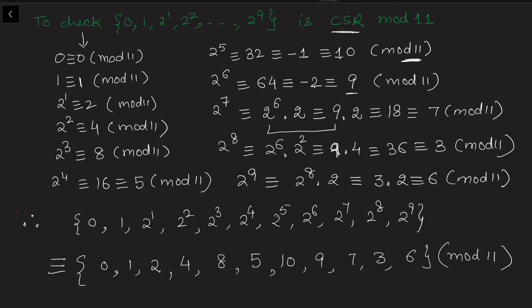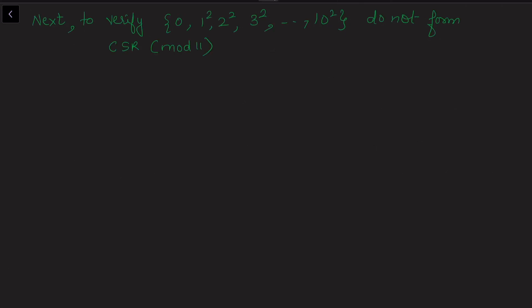We notice that the residues obtained are {0, 1, 2, 4, 5, 8, 10, 9, 7, 3, 6} — none of these numbers repeat, all 11 expected residues 0 through 10 appear exactly once. Therefore we conclude that this set does form a complete set of residues mod 11.